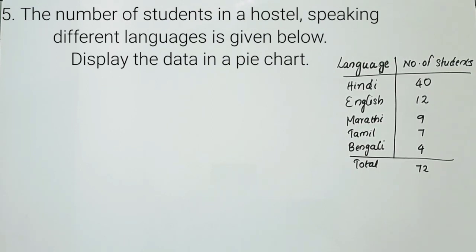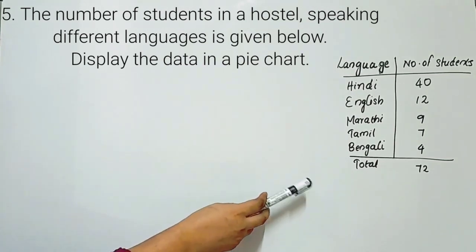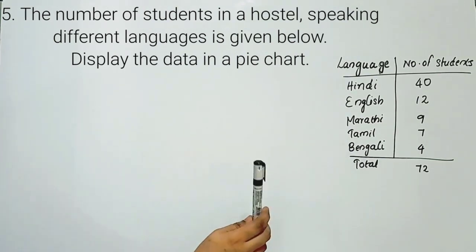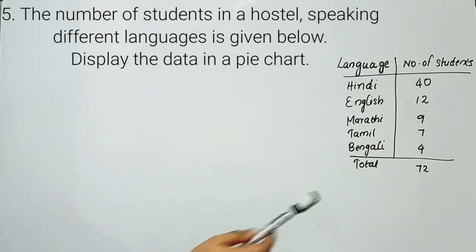In a hostel, students are speaking different languages. The numbers are here. Total students are 72. The languages are: Hindi, English, Marathi, Tamil, Bengali. These are the language-speaking students.